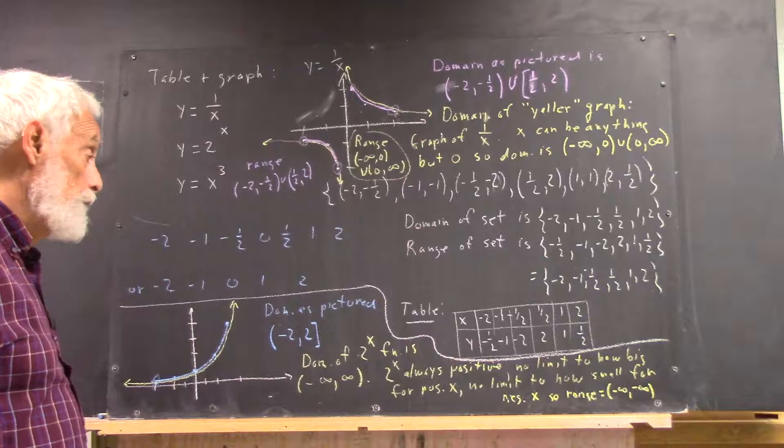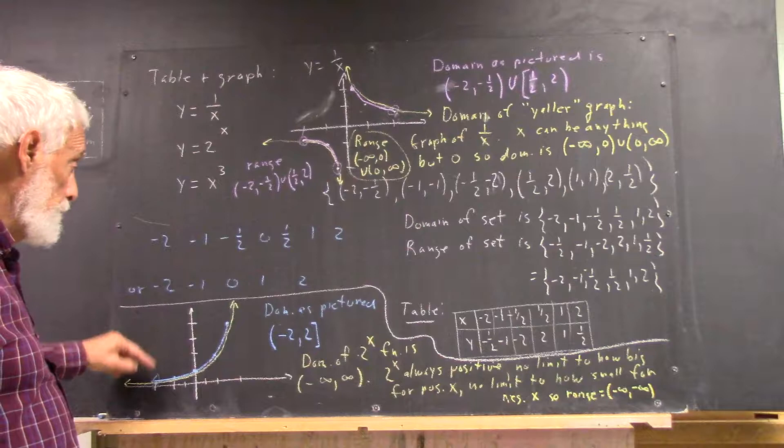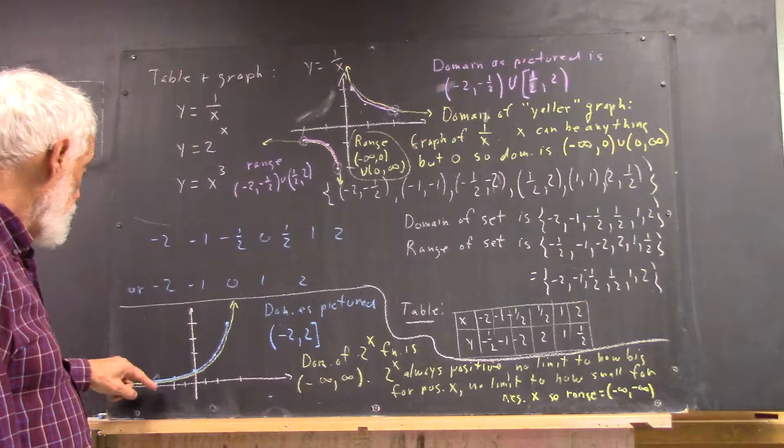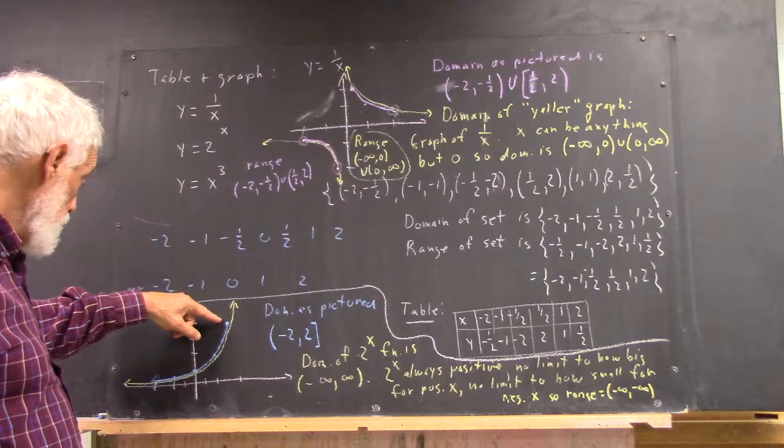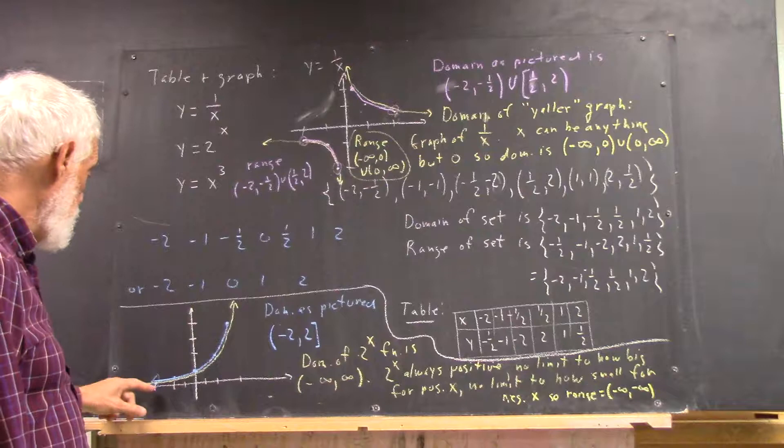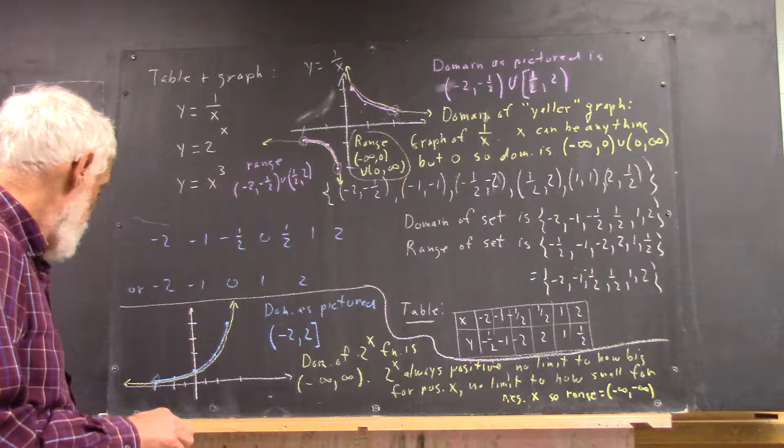And the range would be what? Well, it would be from this coordinate to this coordinate. It would be from 1 fourth to 4. Now, there's a circle around this point. It's a little vague, a circle here, but this point is nice and solid. So we include the 2 out here in the domain. We don't include the negative 2, the x coordinate at this point, nor if we write the range.